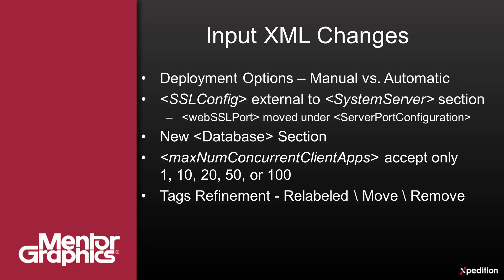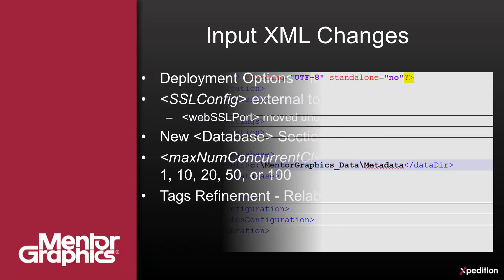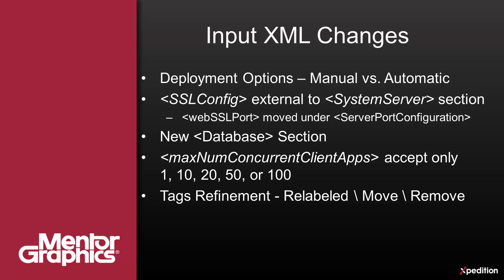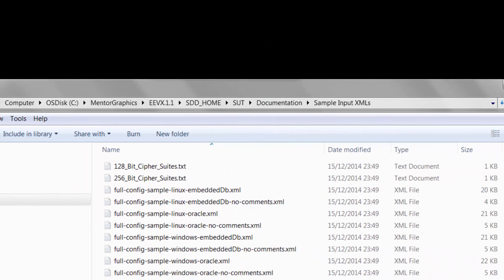We are no longer requiring the largest design size field if XDM Design is not installed. In the embedded database section, we removed the db language field and shifted the data directory field into this section from the system server section. The name field was removed from the vault configuration and database sections. We simplified the tags element supporting the SSL config certificate info section depending on their input type. We created a subsection for all the data directories in the system server section, while still supporting flexibility for customers who wish to customize specific directories. All sample input XML files have been adjusted accordingly, and we created a couple of new ones for your benefit.